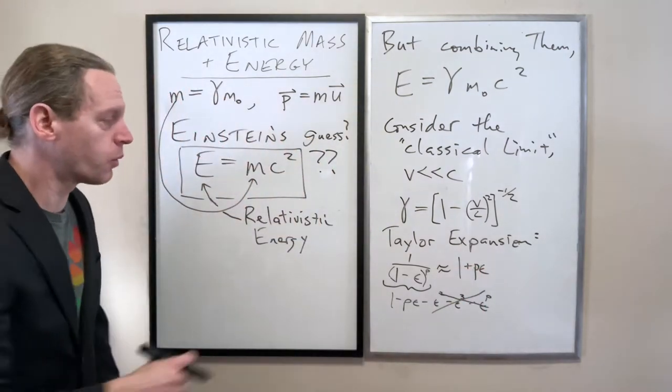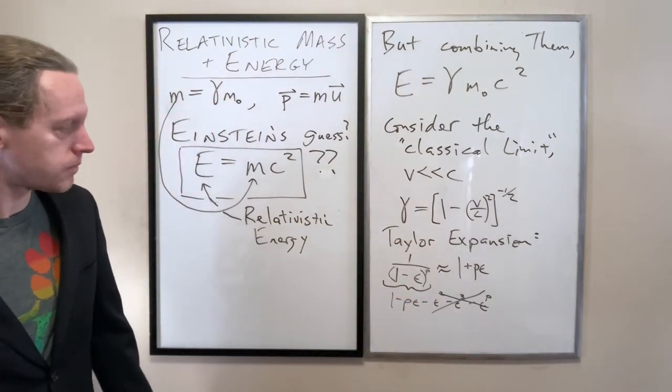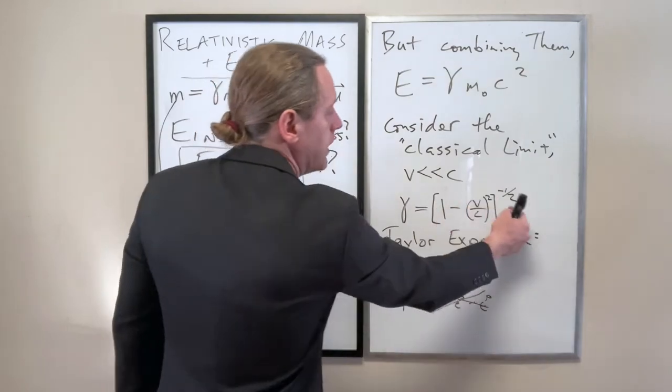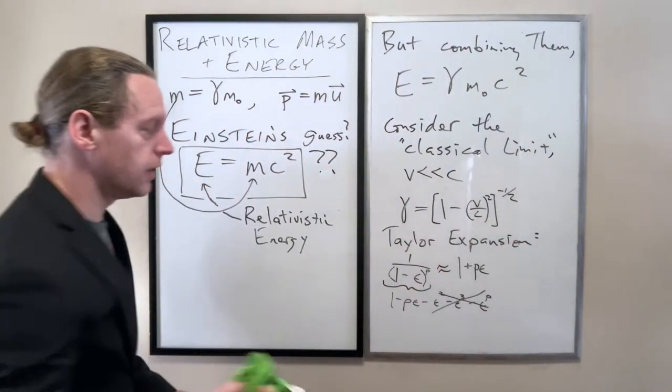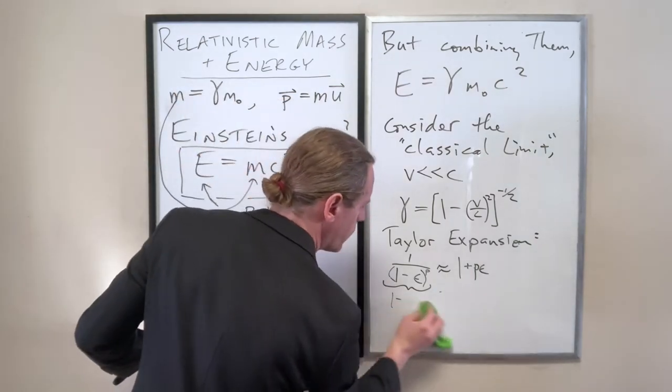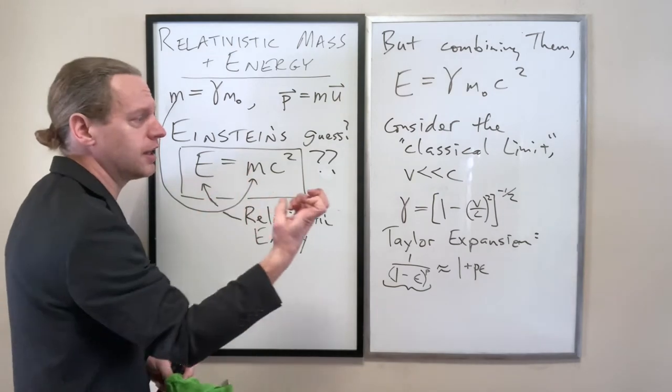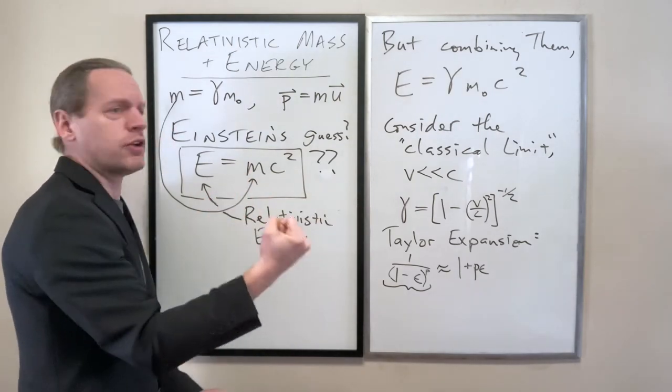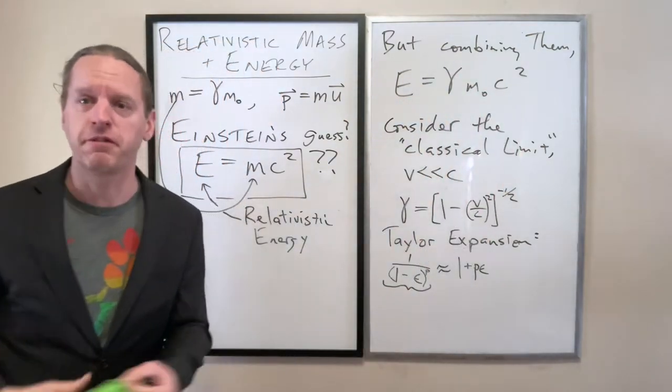And you're going to get a whole bunch of terms here, and you're going to get... So in this case here if you binomially expand these, you get 1 minus P epsilon minus some factor times epsilon squared minus some factor times epsilon cubed, all the way up to epsilon to the P. And there's factors in front that I don't care about. We're going to drop everything here of a higher power.